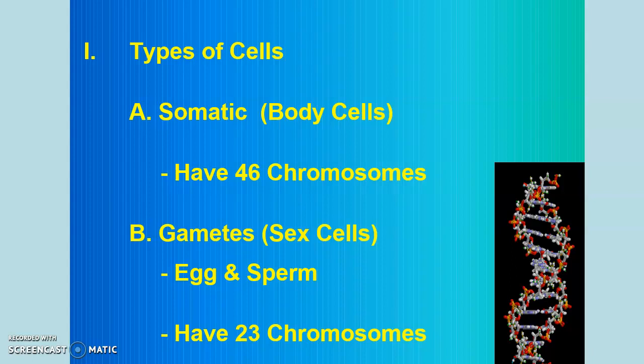Gametes, or sex cells, are very specific. There are two different types: in males, there are sperm; in females, there are eggs. They have half of the DNA — 23 chromosomes. And there's a reason for that. If both parents had 46 chromosomes in their gametes and donated 46, their new baby would have 92 chromosomes, and that is not good. So by having 23 and 23, we solve that problem. Gametes are sex cells with 23 chromosomes; somatic cells are body cells with 46.